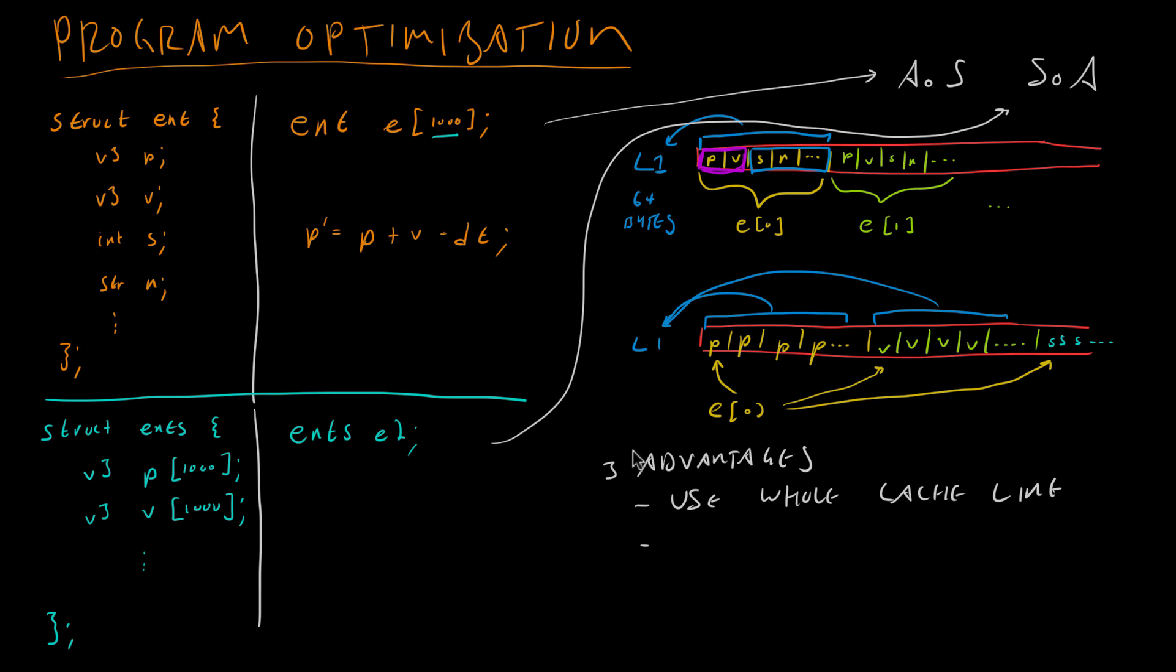The second advantage is the processor now sees that we're using one cache line after another. We're using the first bunch of positions and then the second bunch of positions and the third. These are all contiguous cache lines, the first and then the second and the third cache lines. It recognizes that we are going to need the next cache line very soon and so it actually pulls that into the L1 cache for us before we're even going to need it preemptively. That is called hardware prefetching. The processor predicts that we're going to need the next bit of memory and it pulls it into the L1 cache for us before we're going to need it so that we don't have to do that stall. So already we have a huge performance gain, one from using the whole cache line and two from using hardware prefetching.